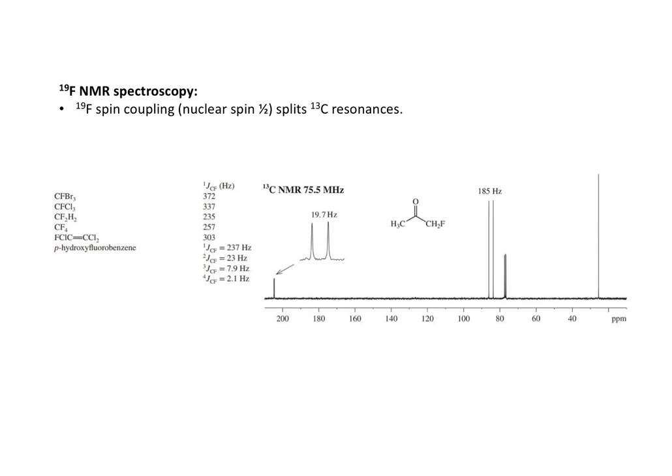The carbon-13 resonances will also be affected by coupling with fluorine-19. The carbonyl carbon of fluoroacetone is affected by a two-bond coupling. The carbon to which the fluorine is attached has a larger one-bond coupling, and is also deshielded by the electronegative fluorine, so that the chemical shift is approximately 85 parts per million.